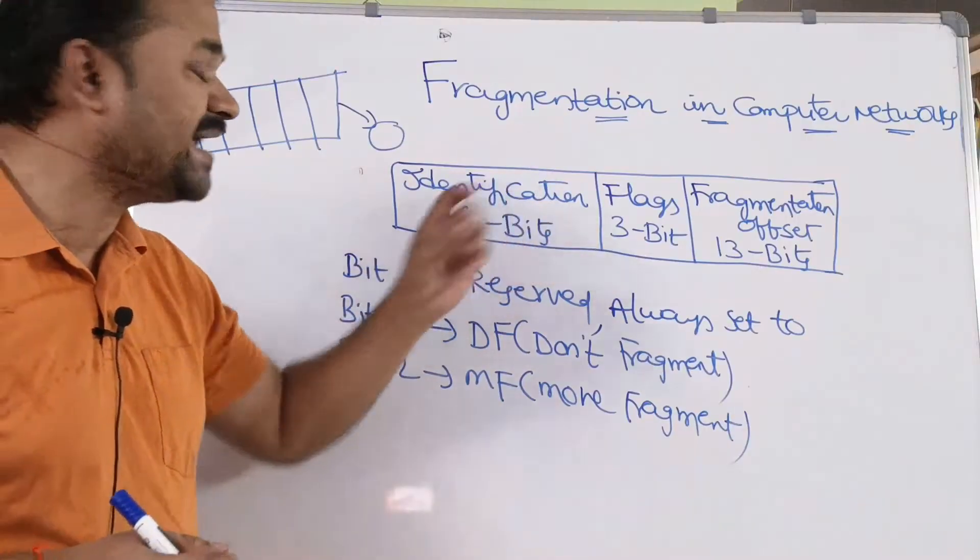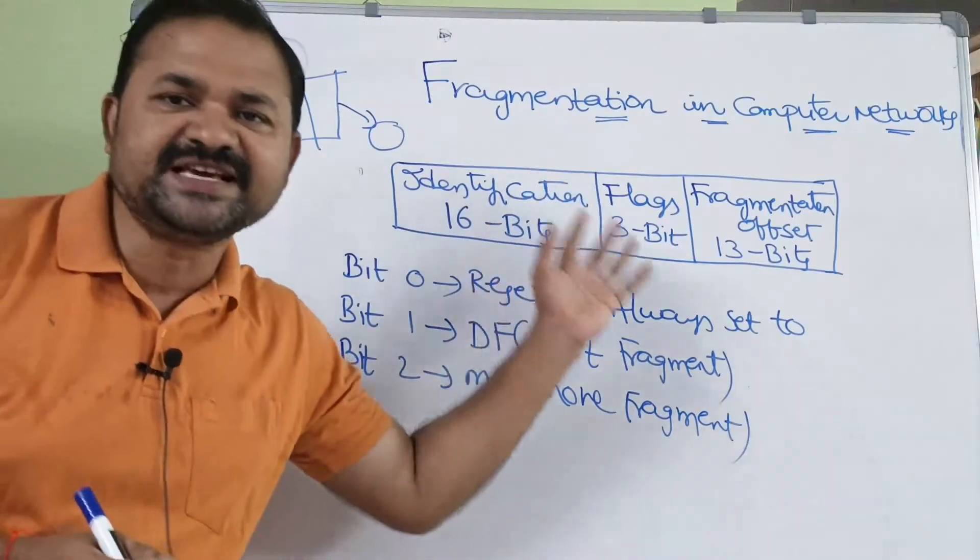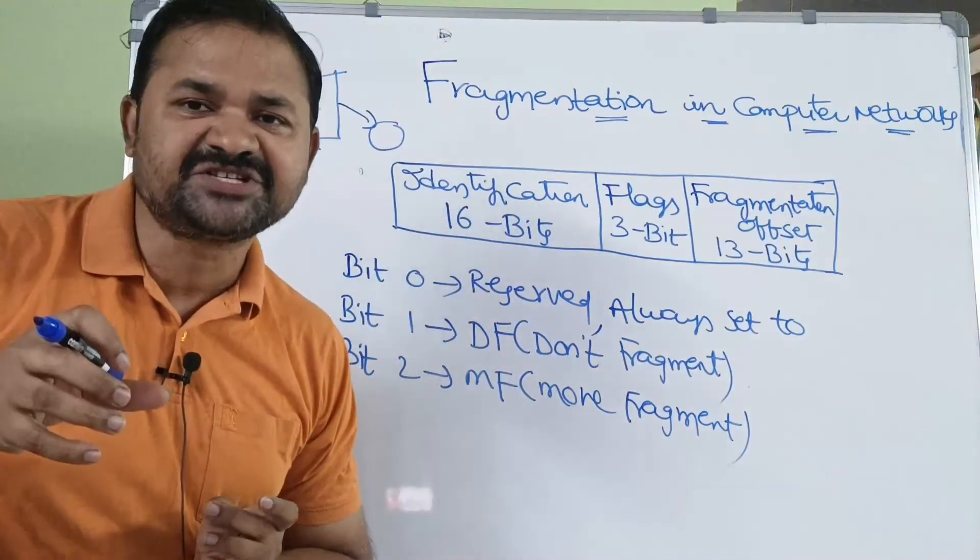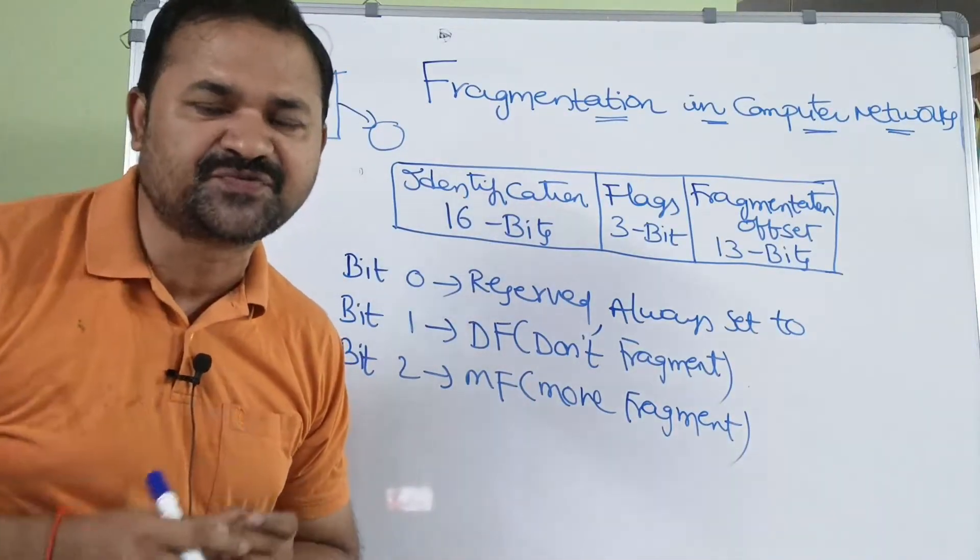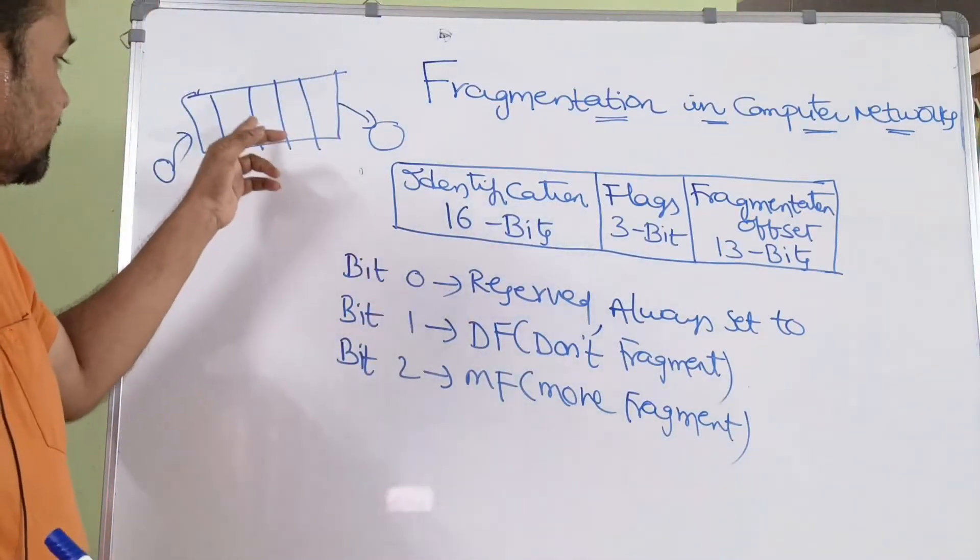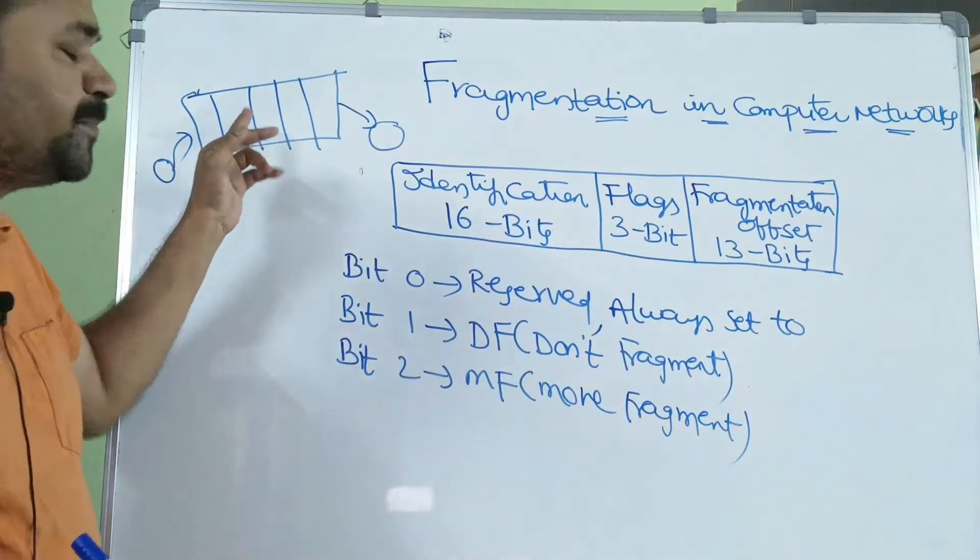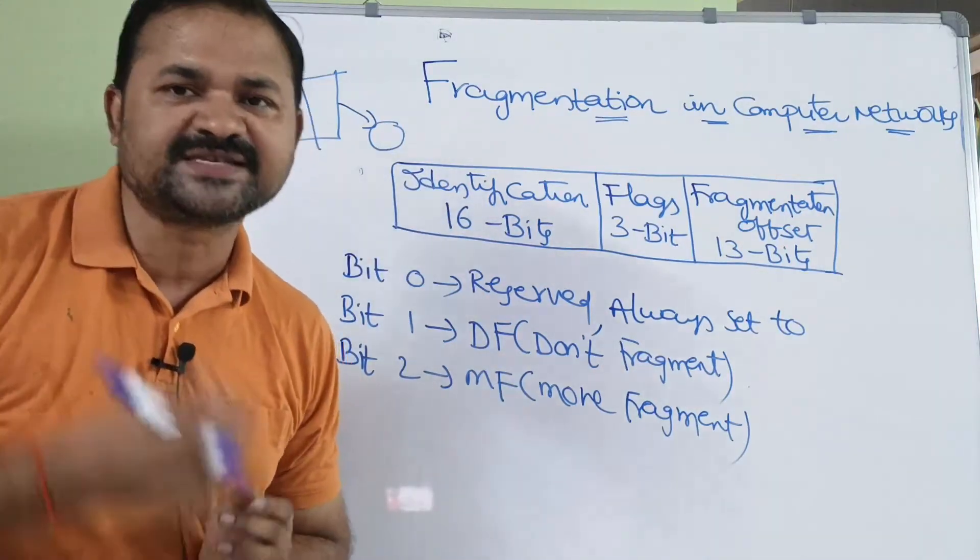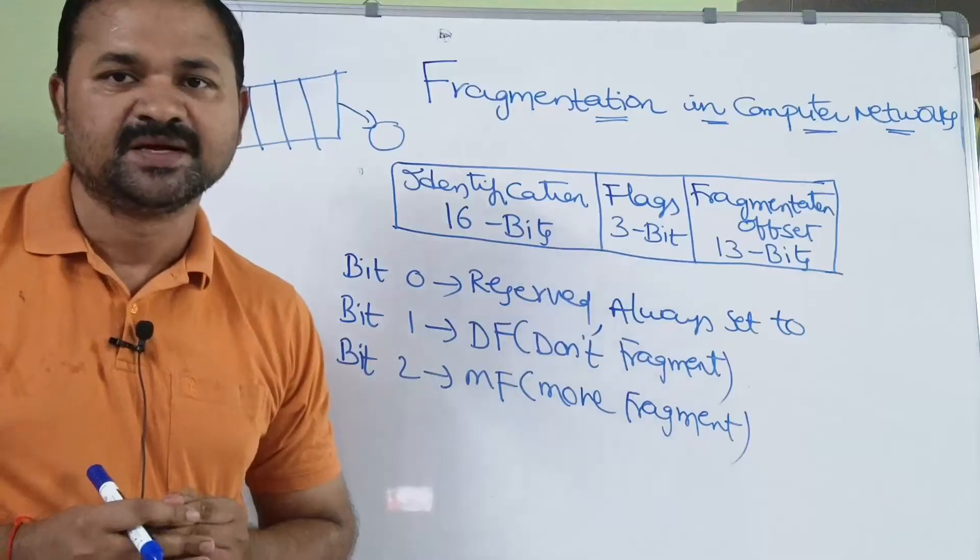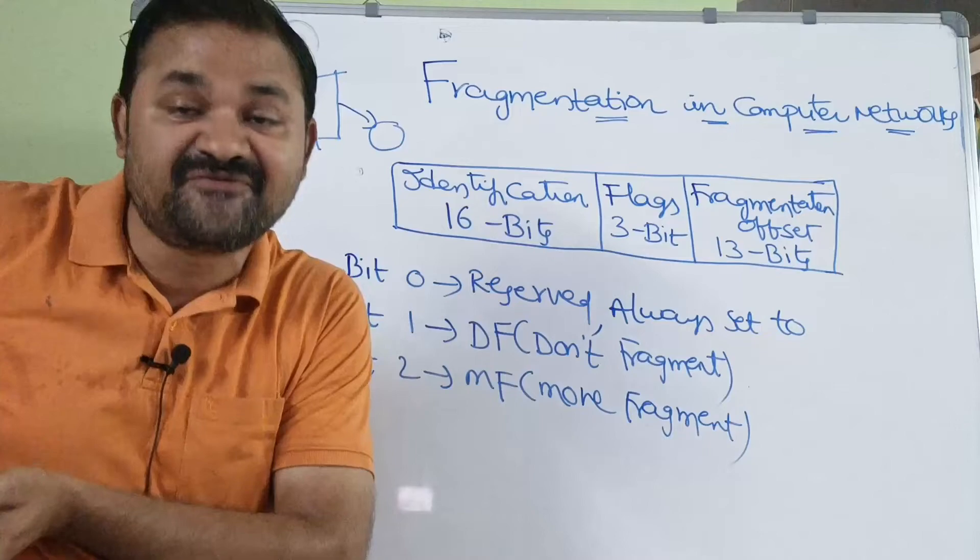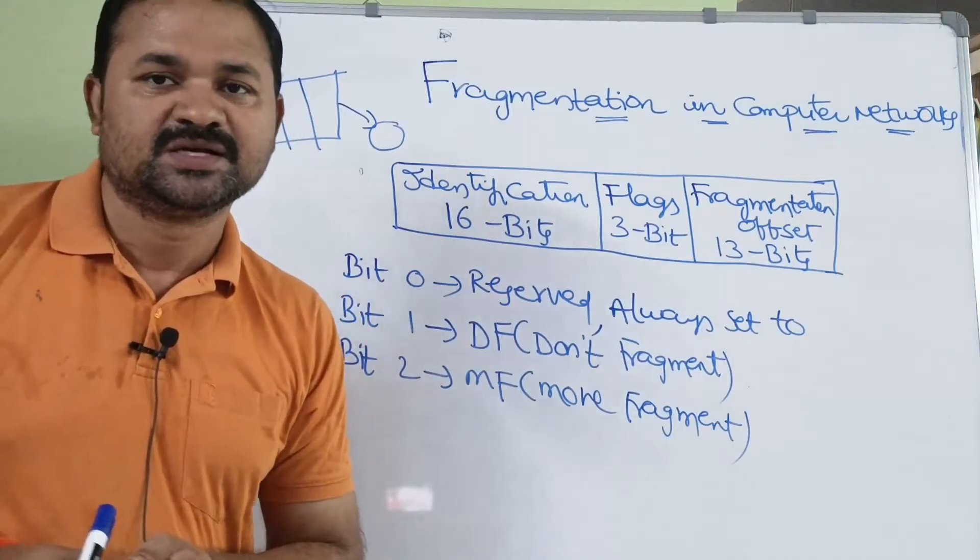First, let us see about identification which is of size 16 bits. The identification field is mainly useful to identify which packet the corresponding fragment belongs to. Why? Because at the destination machine, the receiver must know regarding that packet's fragments.